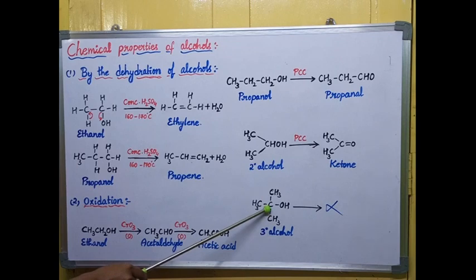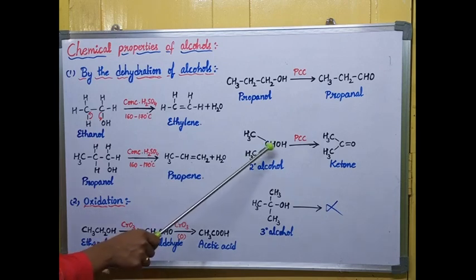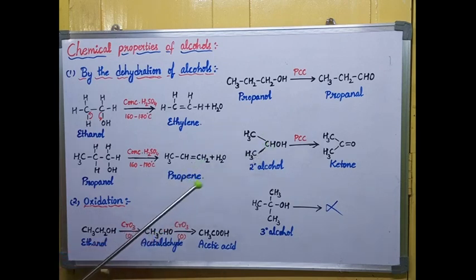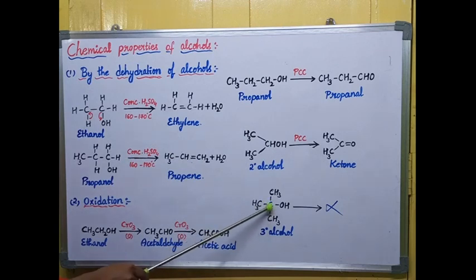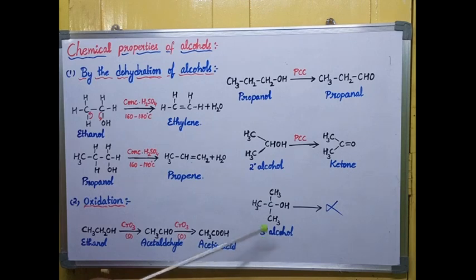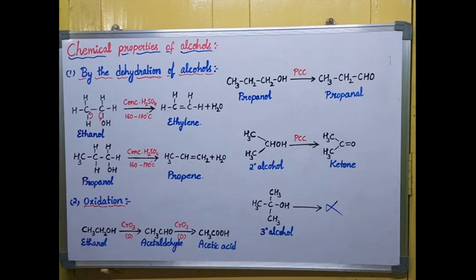Tertiary alcohols will not undergo oxidation easily because there is an absence of hydrogen on the central carbon. The central carbon always has hydrogens in primary and secondary alcohols — those hydrogens are responsible for oxidation. Since there is no hydrogen bonded to the central carbon in a tertiary alcohol, it resists oxidation and will not undergo the oxidation process. This concludes the dehydration and oxidation processes of alcohols.